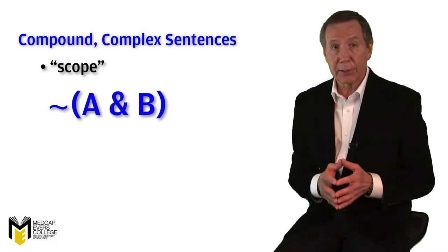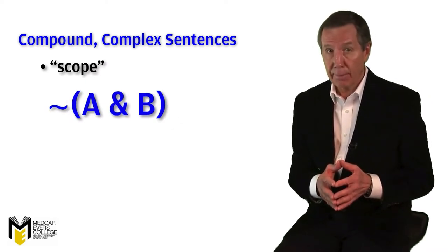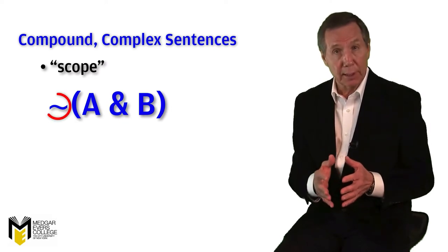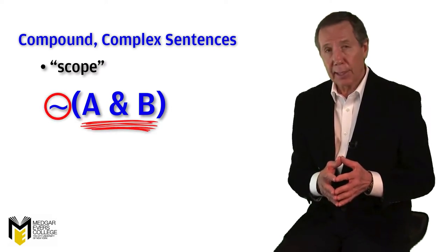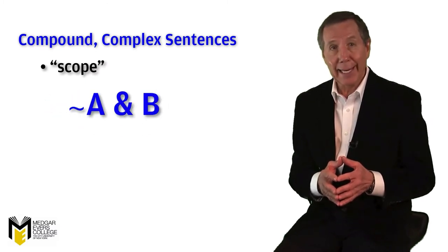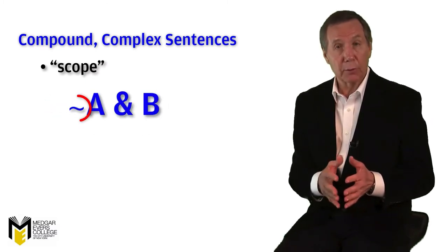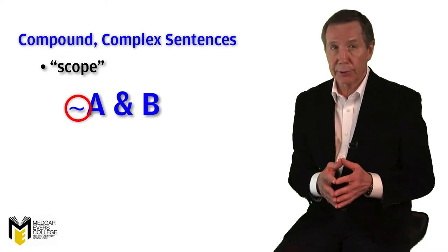In the sentence, it is not the case that both A and B, the scope of the tilde is the conjunction of A and B. On the other hand, in the sentence, not A and B, the scope of the tilde is just the atomic sentence A.